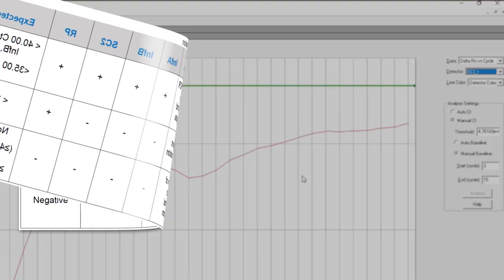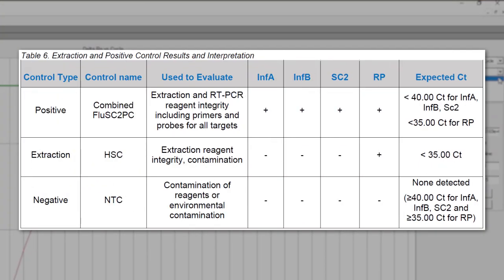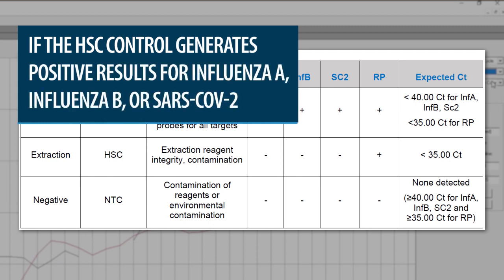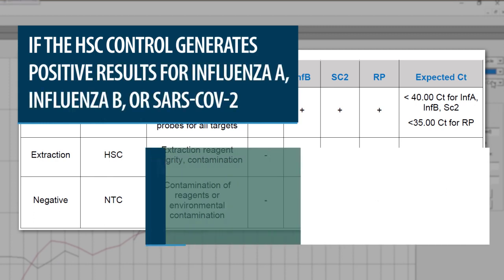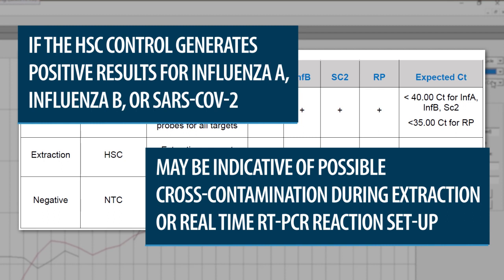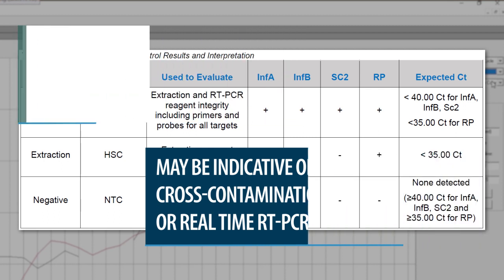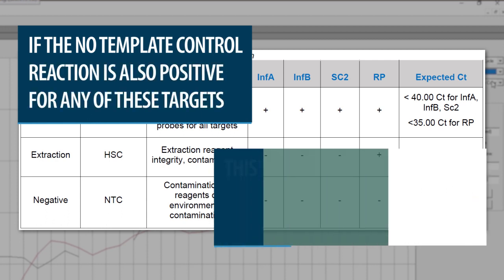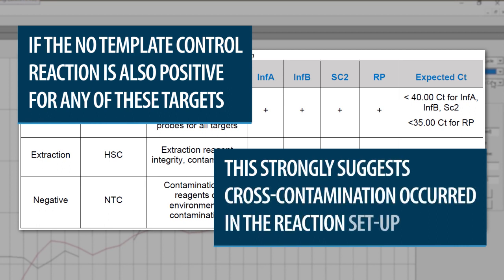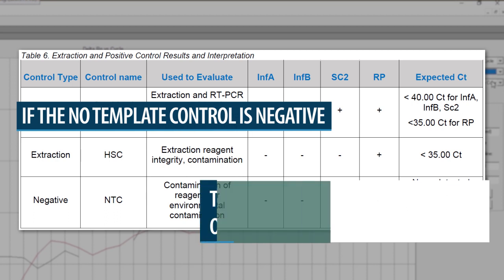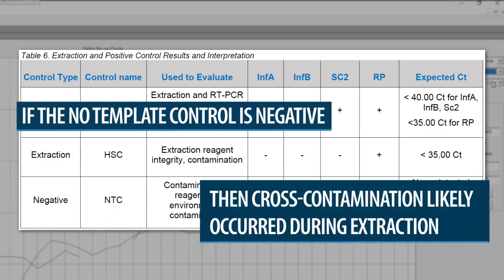If the HSC control generates a negative result for RNAs P, this indicates a potential problem with the extraction process. If the HSC control generates positive results for influenza A, influenza B, or SARS-CoV-2, this may be indicative of possible cross-contamination during extraction or real-time PCR reaction setup. If the no-template-control reaction is also positive for any of these targets, this strongly suggests cross-contamination occurred in the reaction setup. If the no-template-control is negative, then cross-contamination likely occurred during extraction.